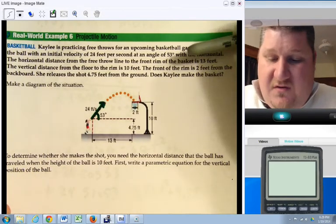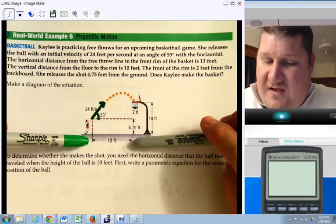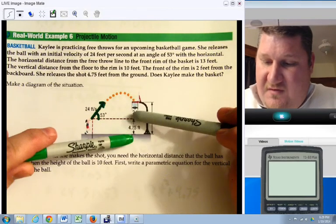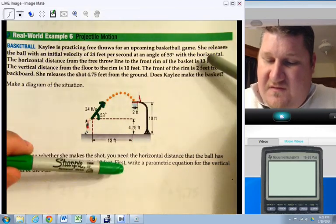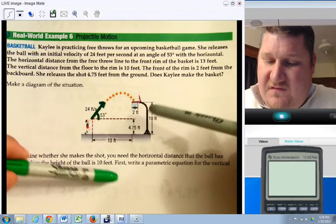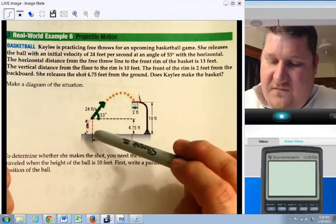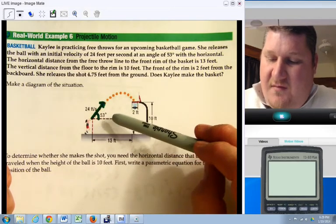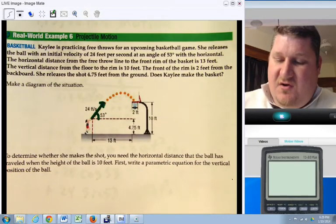The horizontal distance from the free throw line to the rim of the basket is 13 feet. The vertical distance from the floor to the rim is 10 feet. The front of the rim is 2 feet from the backboard. She releases the shot at 4.75 feet above the ground. Does Kaylee make the basket?